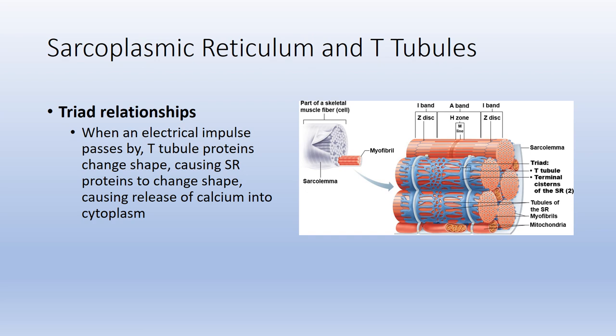To briefly summarize chapter nine part one: we reviewed muscle tissue and the three types, the characteristics of all types, as well as the gross anatomy and the micro anatomy of skeletal muscle.